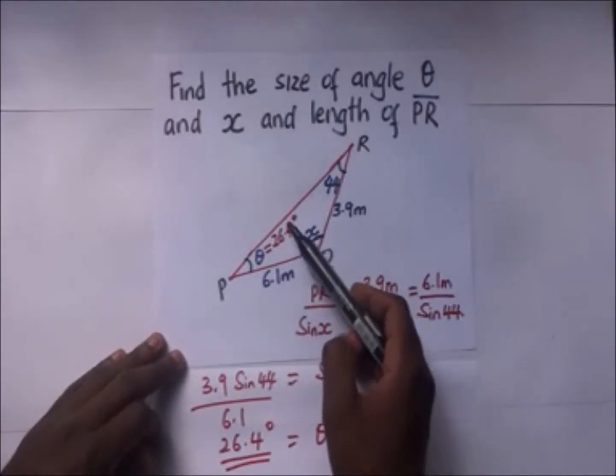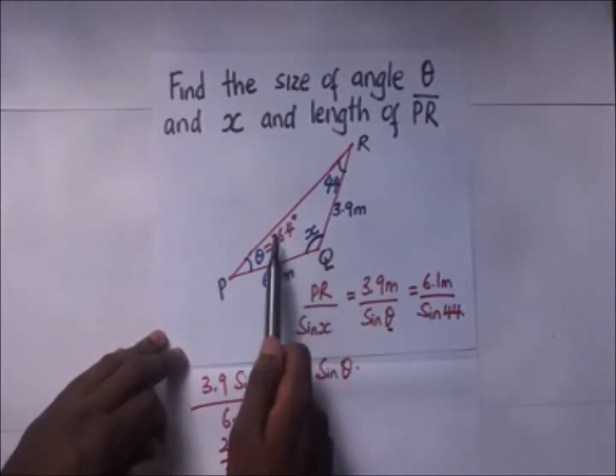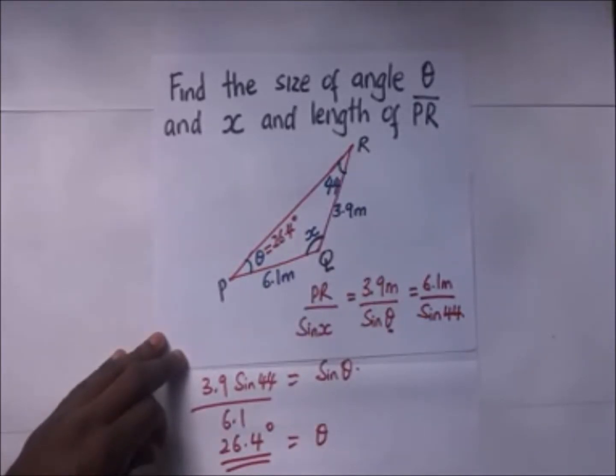So x plus 44 plus 26.4 degrees is equal to 180 degrees and through that we are able to get the value of x, the missing angle.